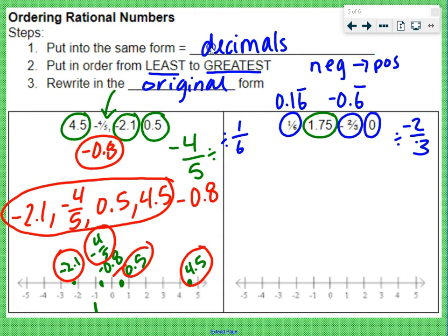So we plot these on our graph. 0.16 repeating would be in between 0 and 1, but remember that is actually one-sixth, so we'd want to use one-sixth. 1.75 is $1.75, so not quite at $2 but a little bit after 1. Negative two-thirds, so that negative 0.6, in between 0 and negative 1, so we could put that right there: negative 0.6. And then 0, which is right here in the middle.